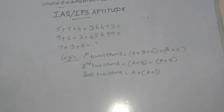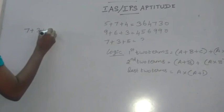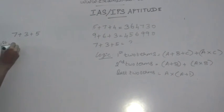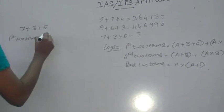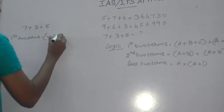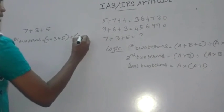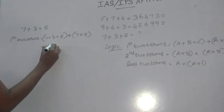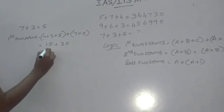Now I have solved this type of problem. 7 plus 3 plus 5. First 2 terms: a plus b plus c plus a into c. That is, 15 plus 35, which is 50.